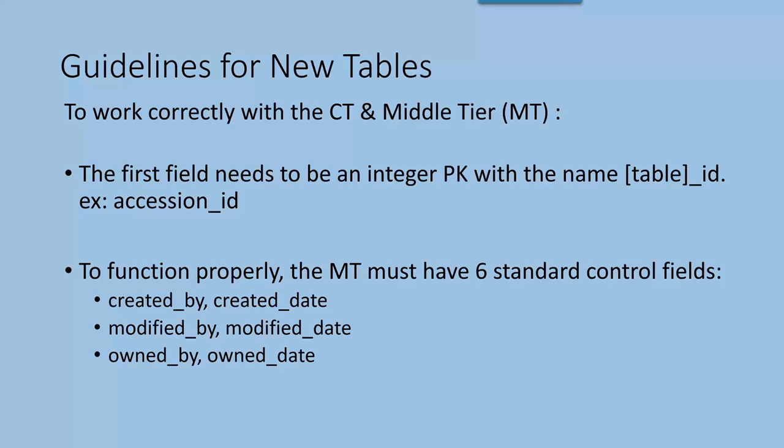Last session I showed you how by adding a new field I could include that in data views. Today I want to walk through what you have to do to put in a new table. Yesterday I had a support question from somebody in Europe who was trying to add a new table to their GRIN Global database and didn't quite get it correctly. I need to update the admin tool guide because I realized this information is not in the guide.